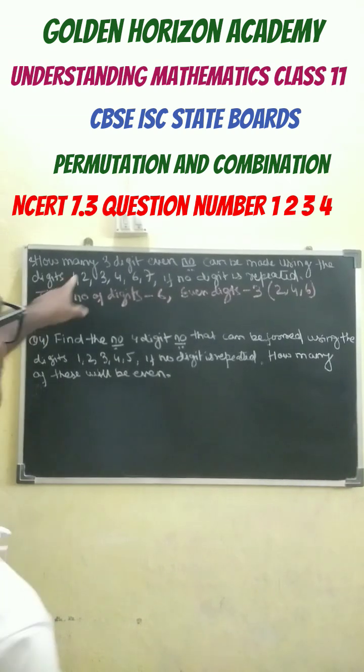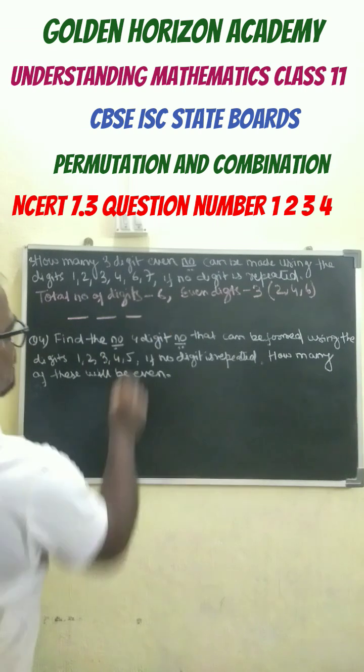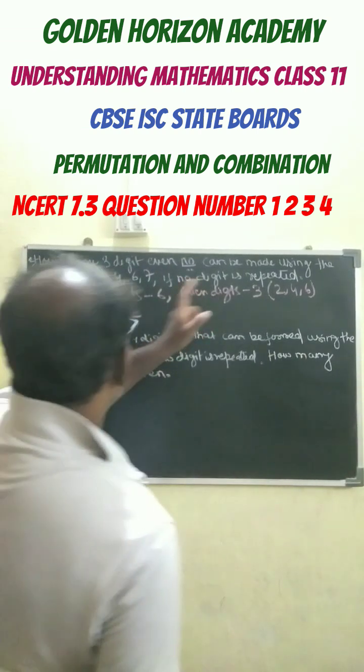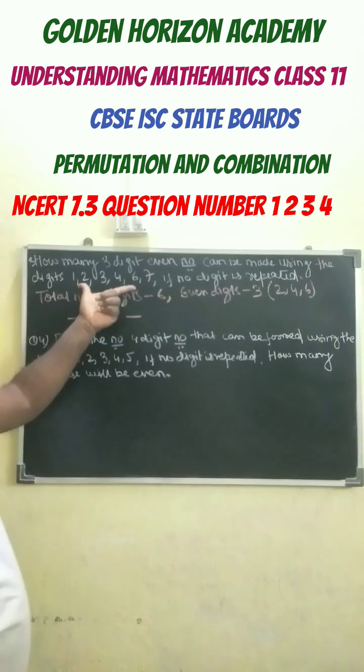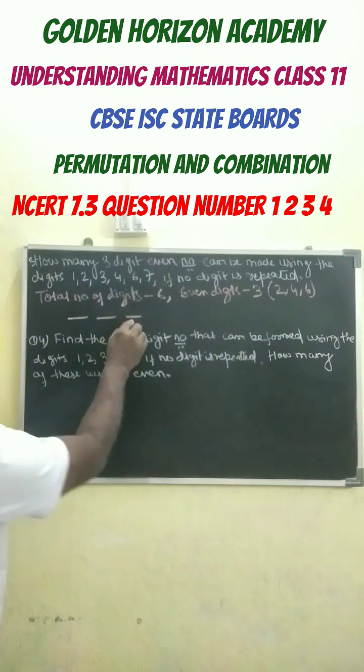The next question is how many three-digit even numbers. Even number means the units place number should be even. The digits are one, two, three, four, five, six - six digits over here. Even digits are two, four, six, so the units place can be filled in three ways.